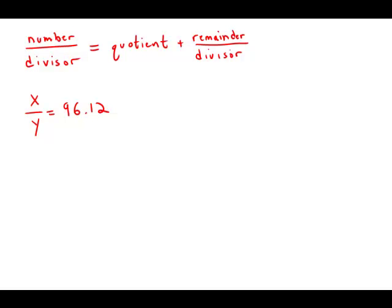When a positive integer x is divided by a positive integer y, the remainder is 9. If x over y equals 96.12, what is the value of y?